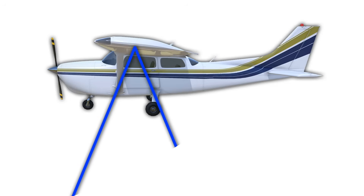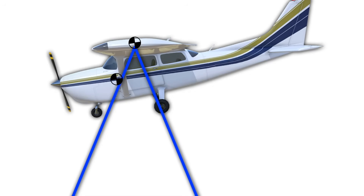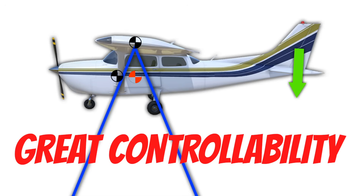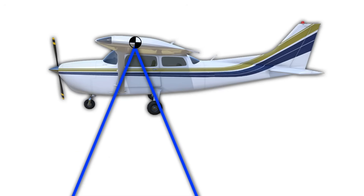In the last lesson, we talked about how the airplane is balanced on its center of lift, and then the center of gravity is placed in front of the center of lift to make the aircraft nose-heavy. When the aircraft starts moving through the air, the tail creates a downforce which moves the apparent center of gravity back, which then balances out the airplane. A balanced airplane has great controllability.